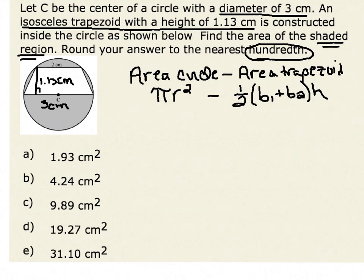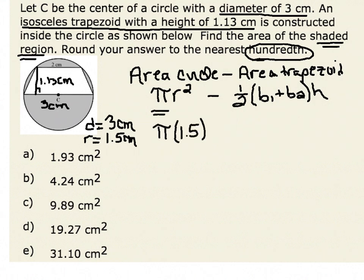Let's look at the area of the circle first. We must first find the radius. Since we know that the diameter of our circle is 3 centimeters, the radius is half of the diameter, which gives us 1.5 centimeters. Therefore, the area of the circle is given by pi times 1.5 squared.